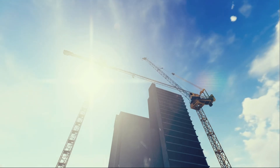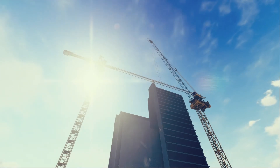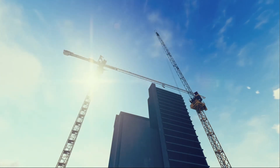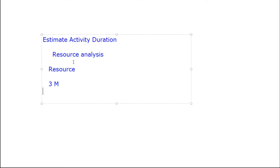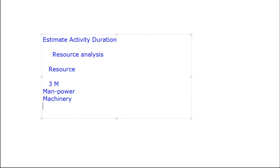Before we learn resource analysis, we need to know what resources are. Resources are what you can utilize for your project for successful execution. We have three types of resources - the 3M: Manpower Resources, Machinery Resources, and Material Resources. It is very easy to memorize with the word 3M.